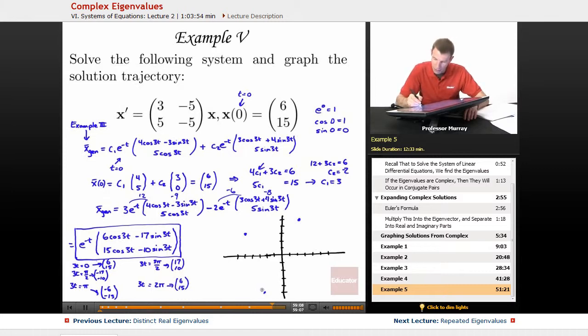And finally, 17, 10. Sorry, it should have been negative 17, negative 10. So that takes me down about right there. And 17, 10 is here's 17 and here is 10.